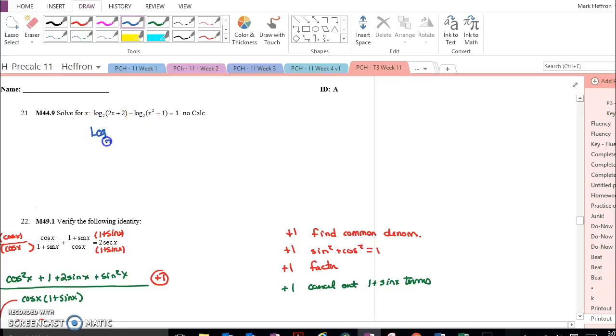So we have log base 2 of 2x plus 2 in the numerator, and because we're subtracting, we have x squared minus 1 in the denominator, and this equals 1.